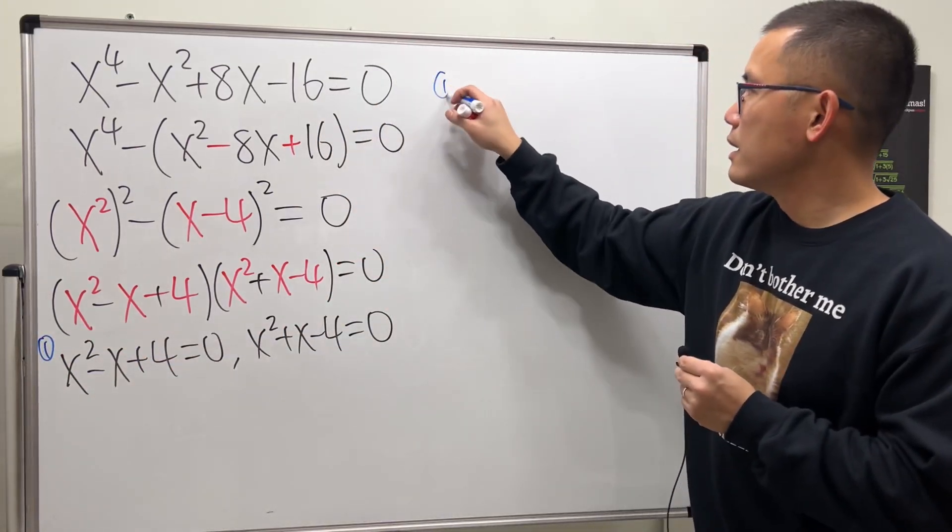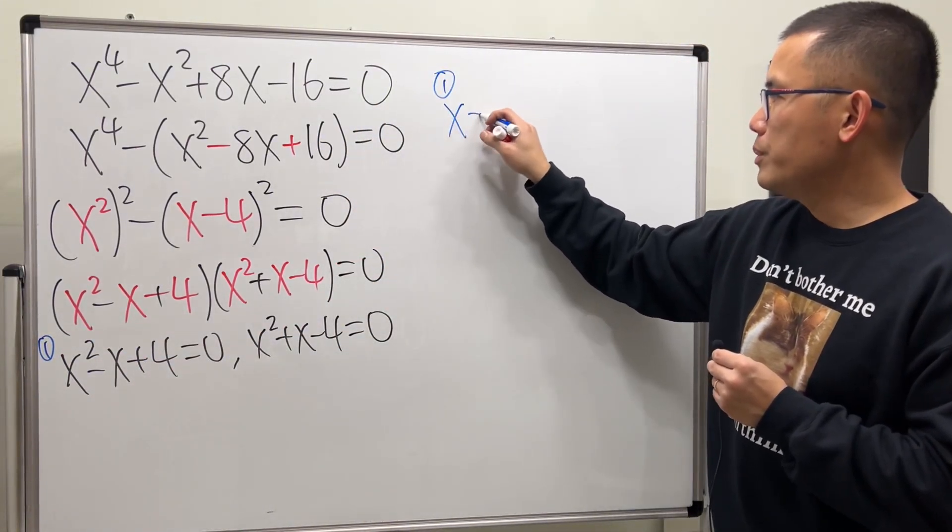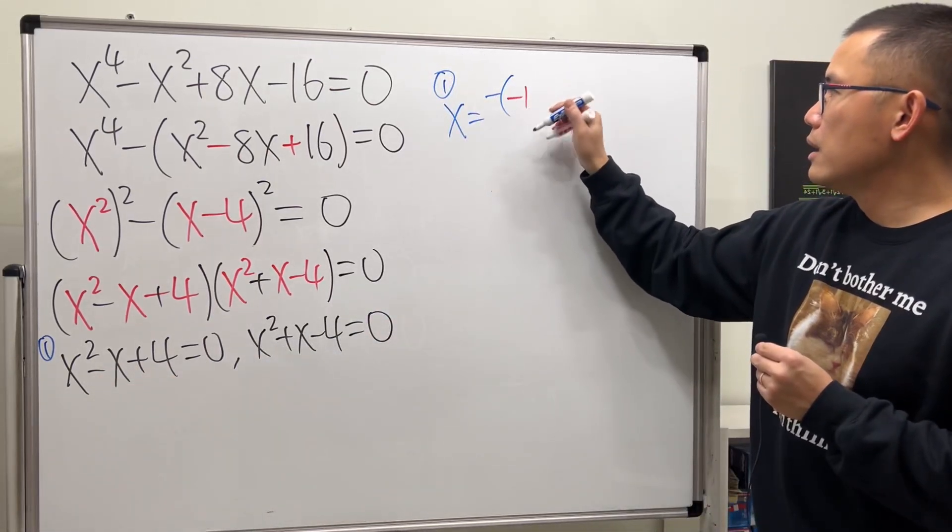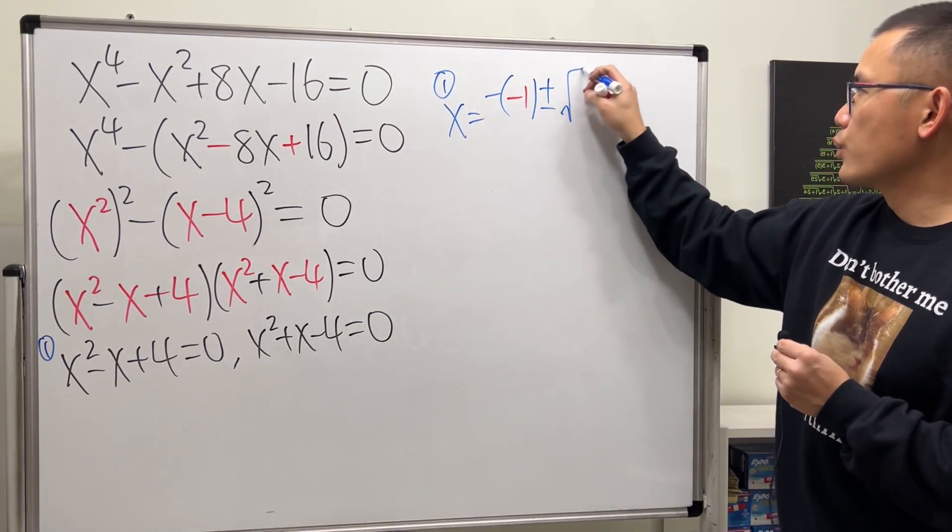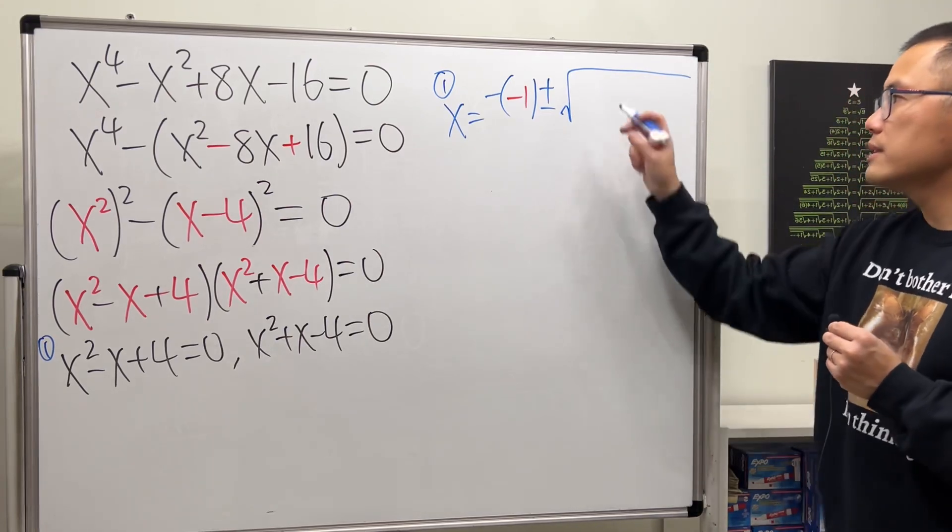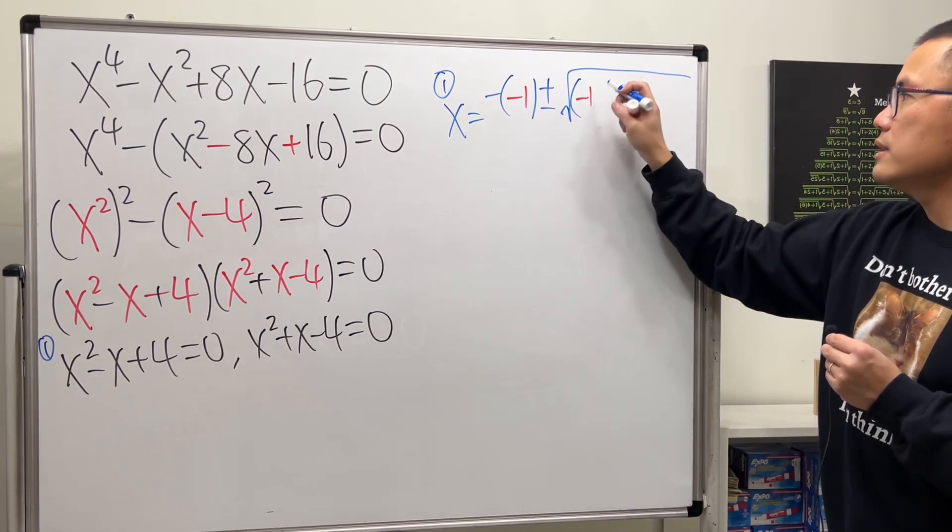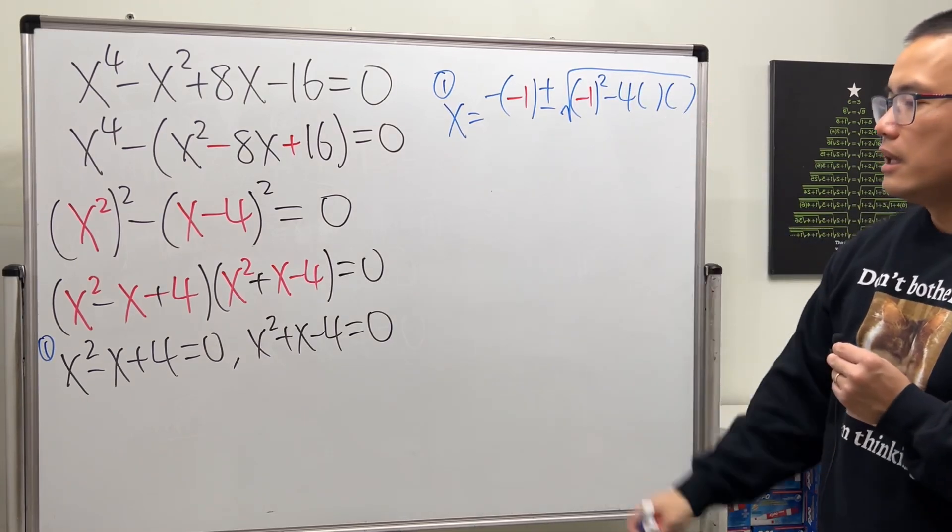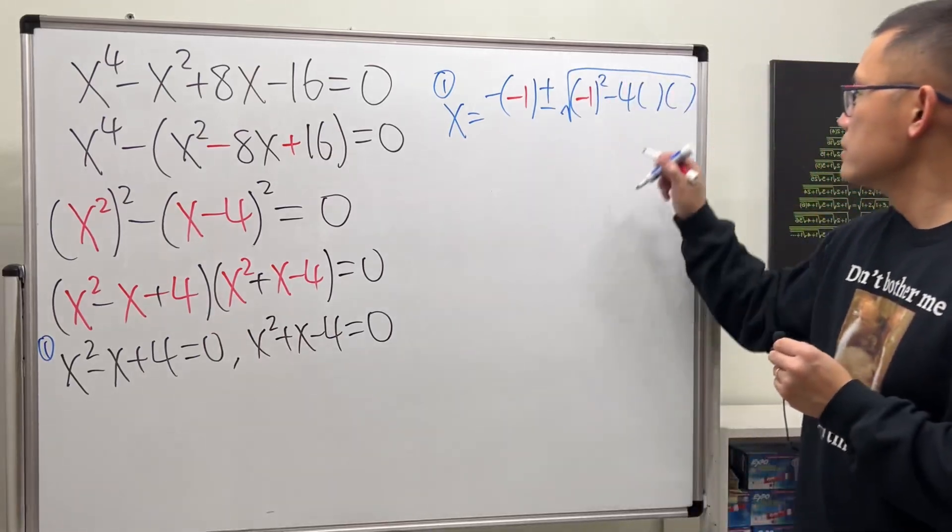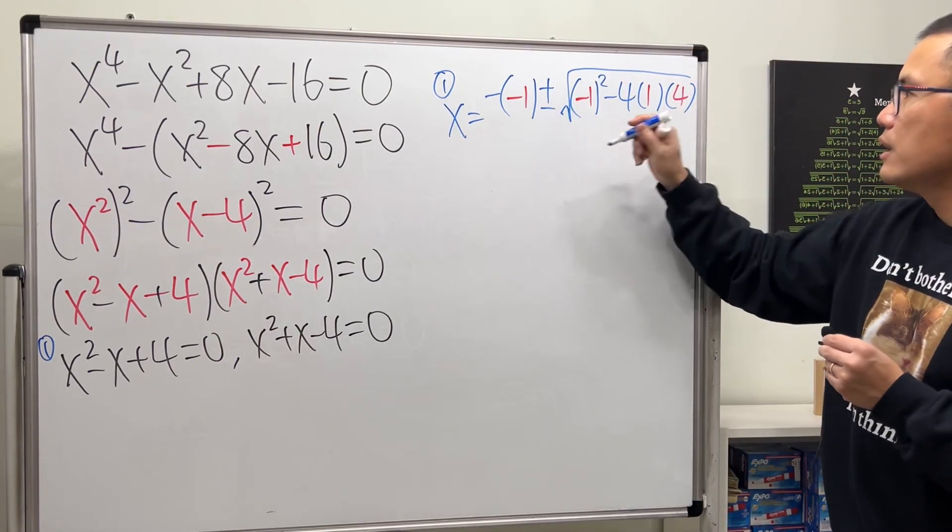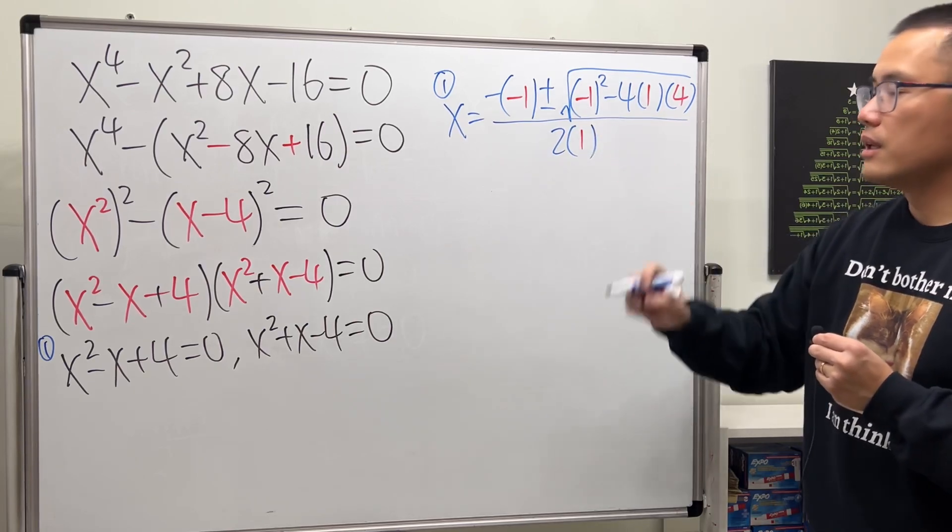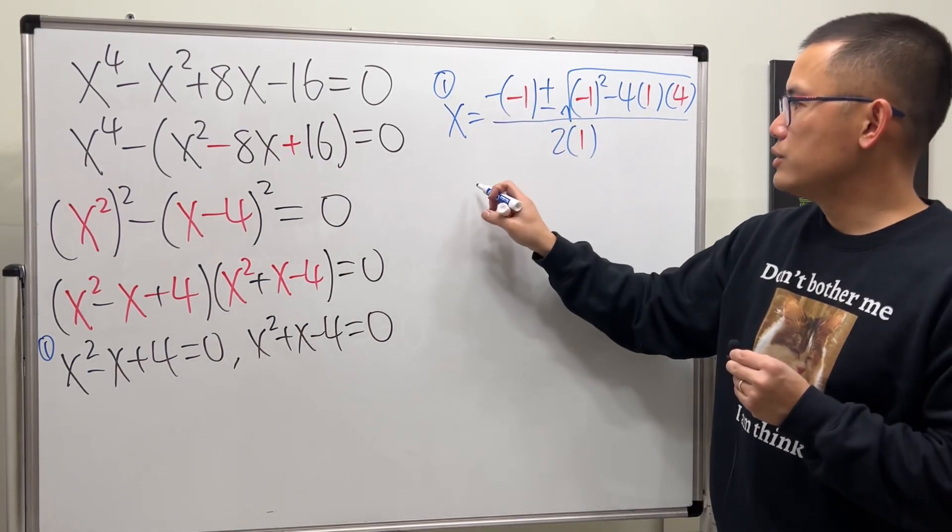x will be negative b, which is negative 1, and then plus or minus square root of b squared, which is (-1) squared, minus 4ac. a is 1 and c is 4, so we have 1 here and 4 here, and then all over 2 times a, which is 1.